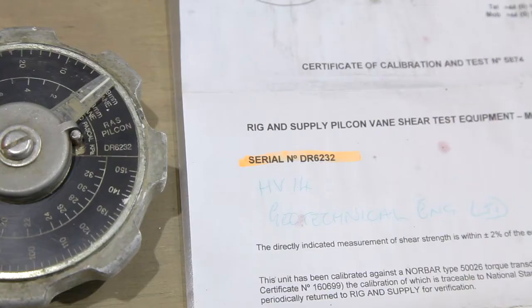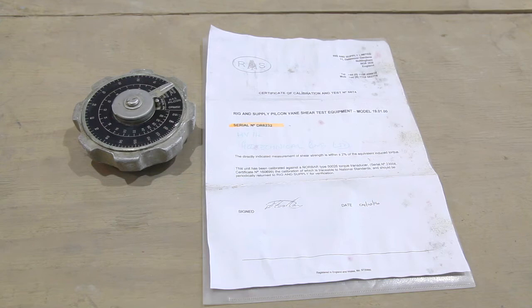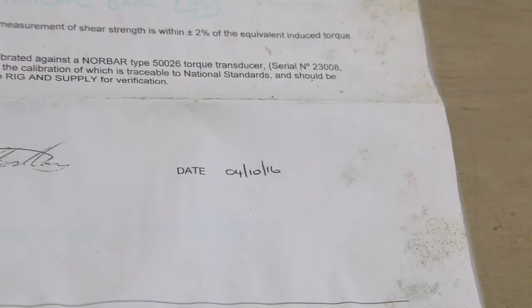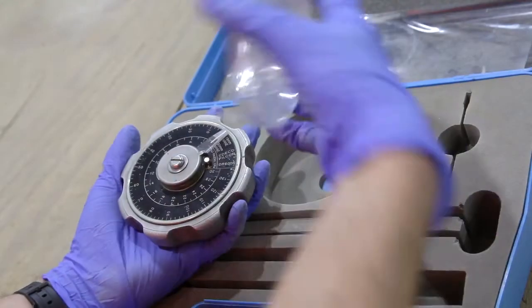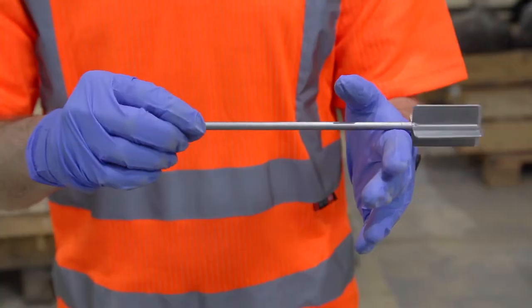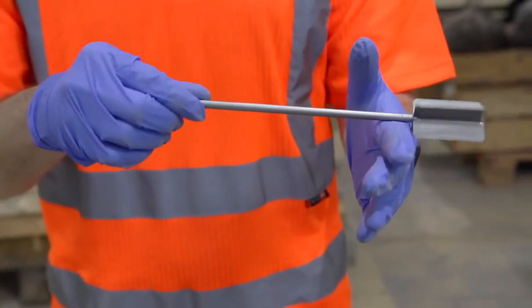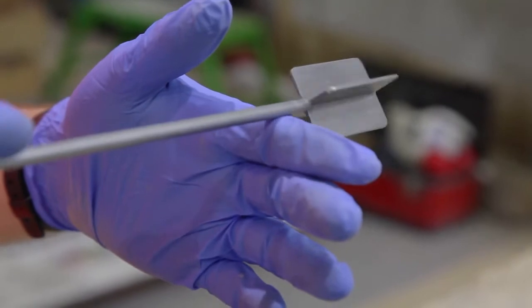Our vanes are calibrated each year. Check that a valid certificate is provided with the vane. Remove the cover. Check for bent rods and a clear mechanism. Do not use the instrument if damaged.